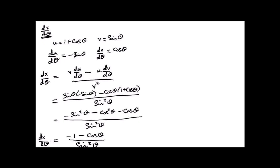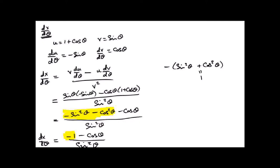So dx d-theta equals minus 1 minus cos theta divided by sin squared theta. The minus 1 came from the identity: cos squared theta plus sin squared theta equals 1, so minus cos squared theta minus sin squared theta equals minus 1. Now we have to get dy d-theta as well — that's dx d-theta sorted, so now we have to do the same for y.